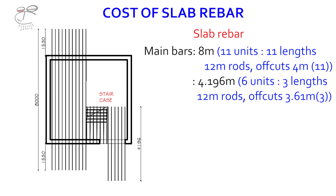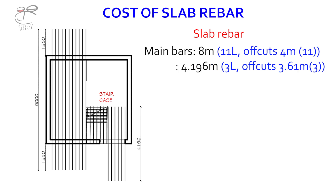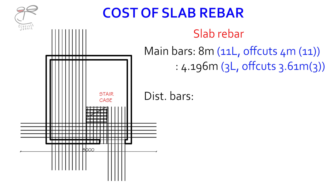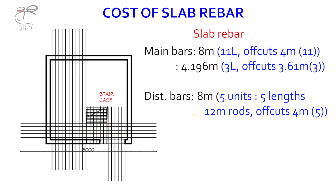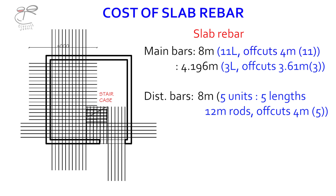For the distribution bars, which are the horizontal ones that go on top of the main bars, the individual length is about 8 meters. We'll specify that, and the number of distribution bars in that region is 5 units, so we need 5 lengths of 12-meter rods. We'll get 4-meter off-cuts — 5 of those. So on the remainder, we have distribution bars of 4-meter length.